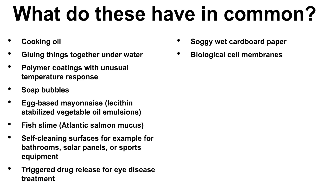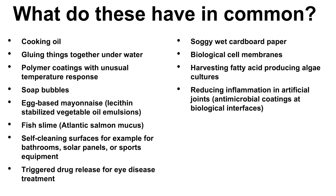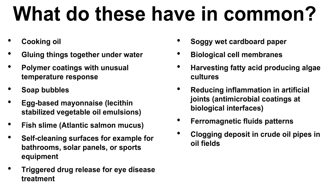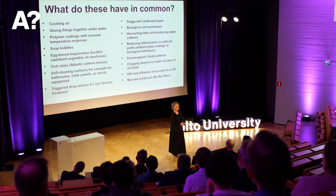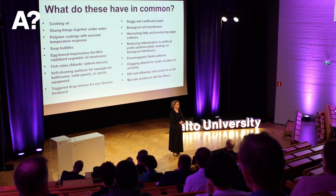Biological cell membranes. Harvesting fatty acid-producing algae cultures. Reducing inflammation in artificial joints. That's antimicrobial coatings at biological interfaces. Ferromagnetic fluid patterns. Clogging deposit in crude oil pipes in oil fields. HIV, influenza, virus and their entry to biological cells. Microbe-produced cell fibers. What is the common factor here? These are all materials and topics that I have so far computationally modeled in my research.